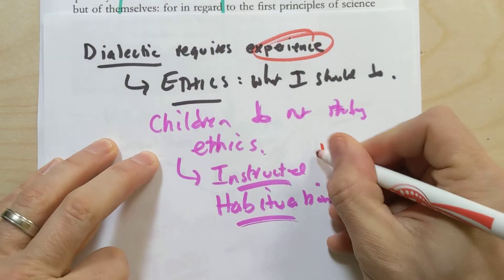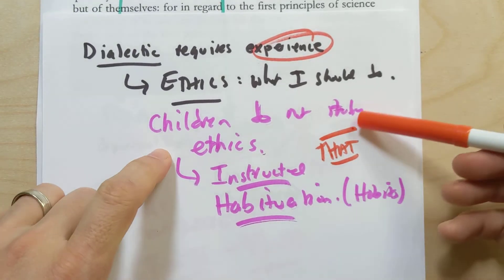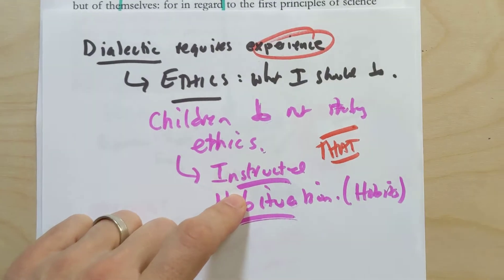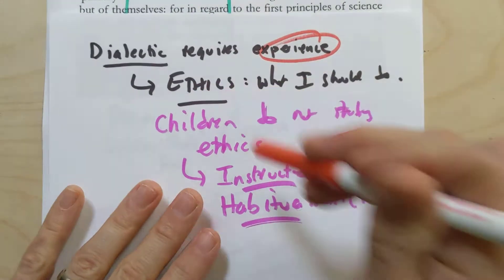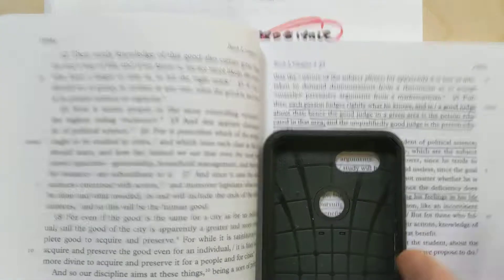They can't address the common views and the views of the wise and try to get to why. They need to know that certain things are true and that's how they should act, and they need to become the kind of person who would act according to the knowledge that their parents teach them to be the right thing. And so when Aristotle talks about this, let's read a quick text where he talks about how dialectic requires experience.